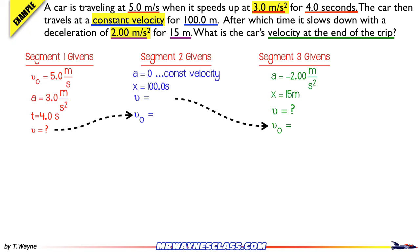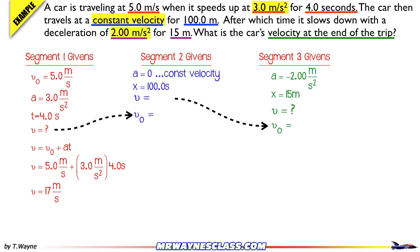I can find the final velocity for the first segment. I have v₀, a, and t, so I use the formula v = v₀ + at. Plugging in all the numbers from the first segment, I get 17 meters per second. And I know that the final velocity for the first segment becomes the initial velocity for the second segment.